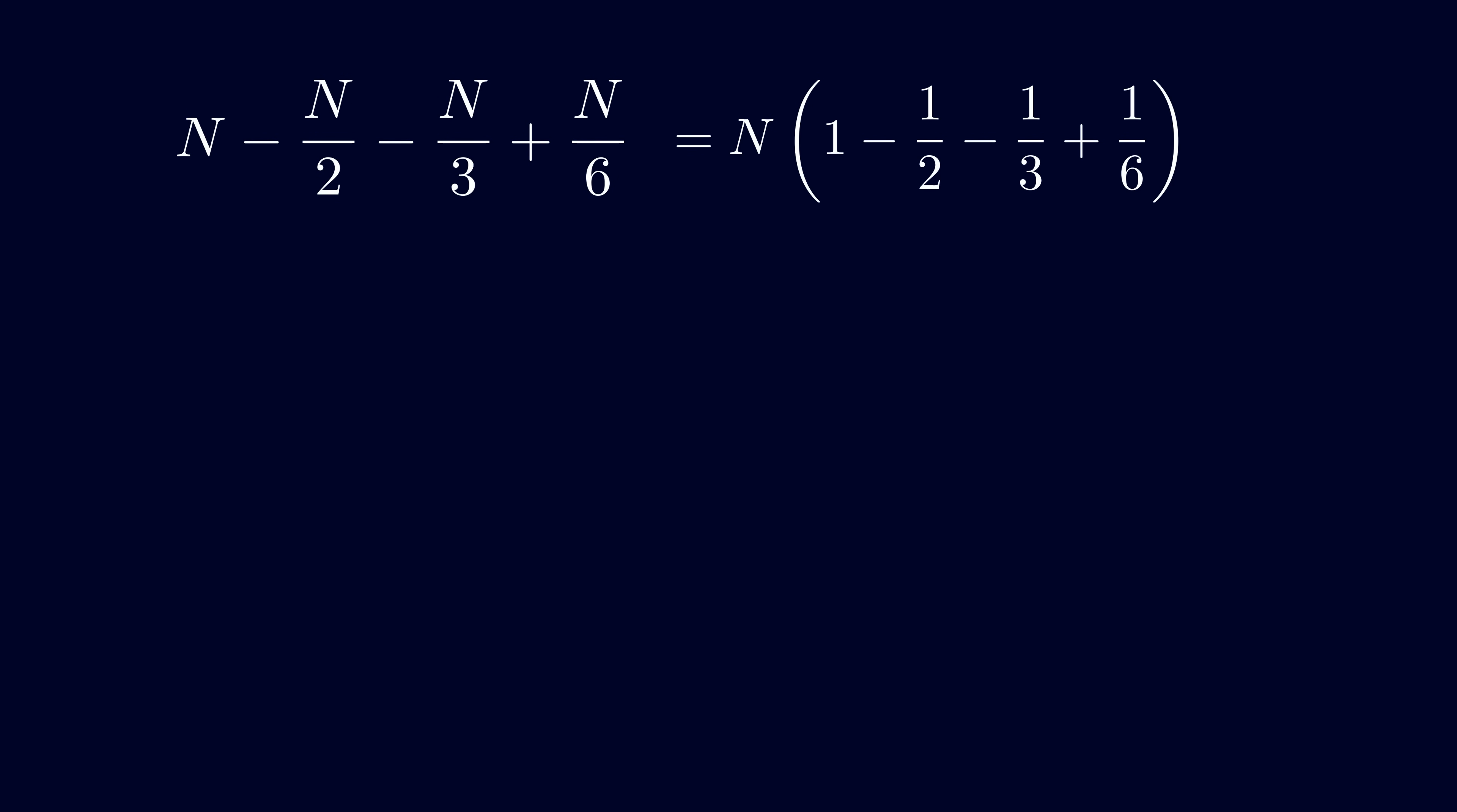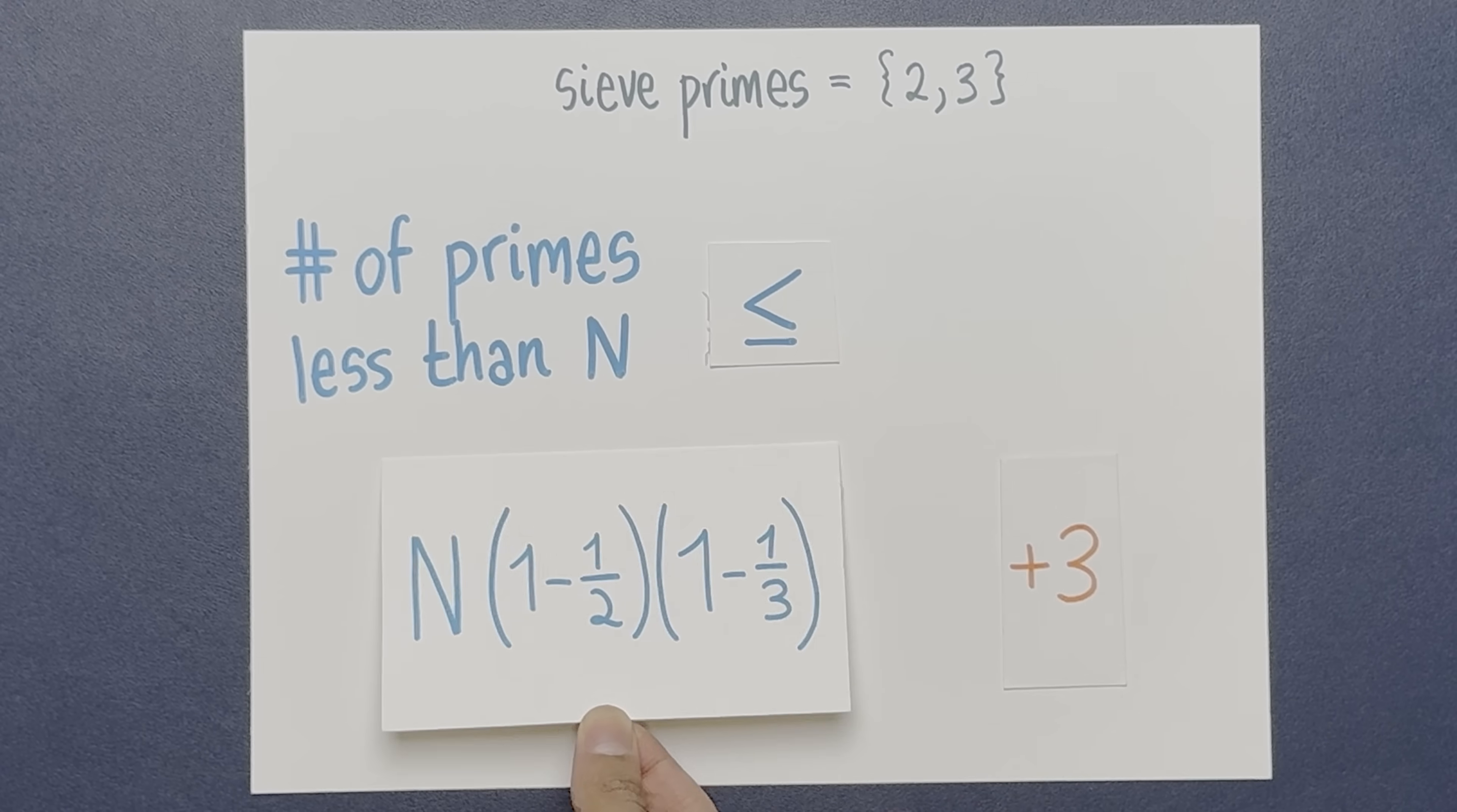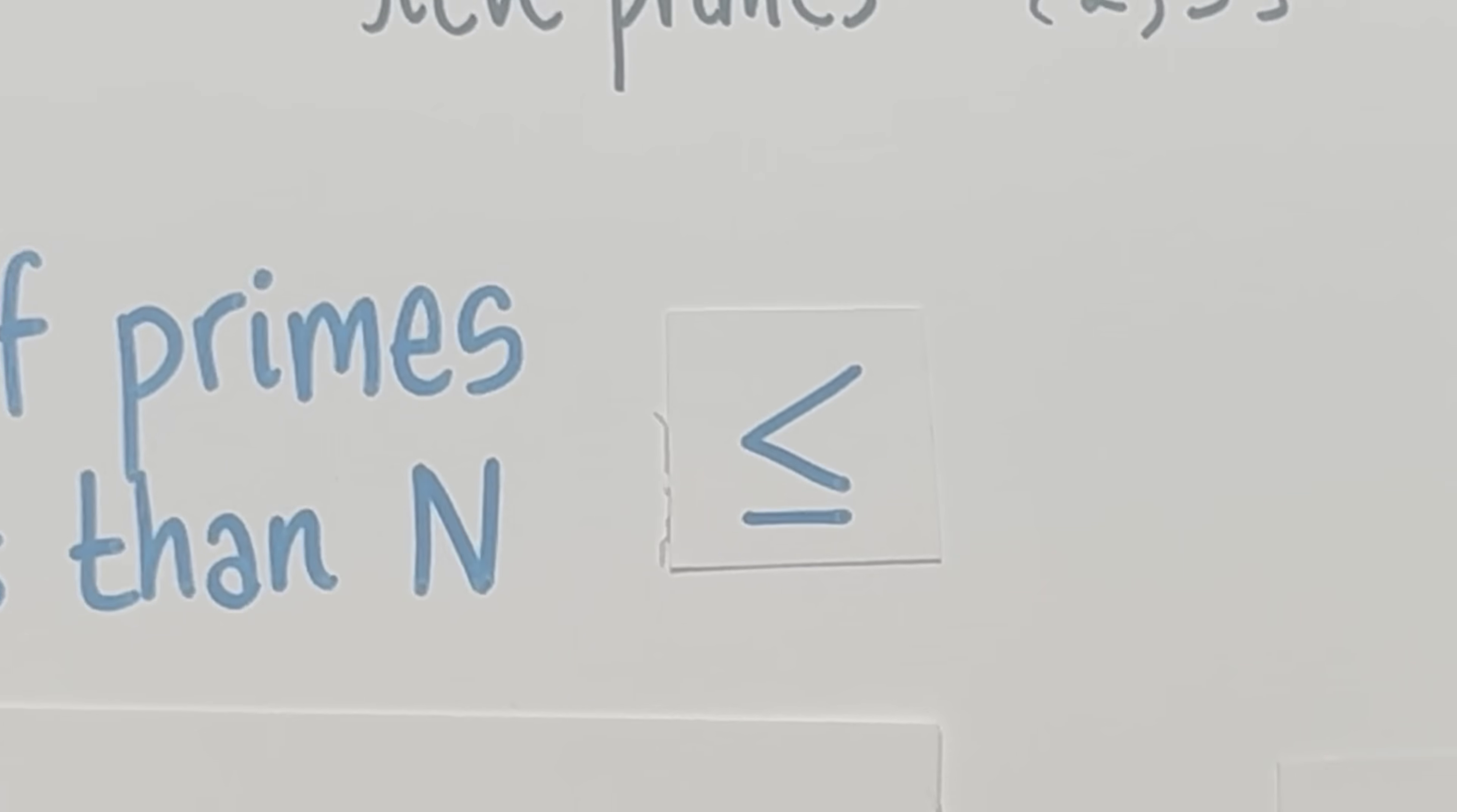So how do we deal with the main term? So here is the main term. First, let's factor out the n. Our goal is to simplify the term in brackets. First, try grouping the first two terms. I want you to look at the last two terms. Minus 1 third plus 1 sixth. We can factor minus 1 third from the last two terms. Notice that the term 1 minus 1 half appears twice. So factor it out. So we can write our main term as follows.